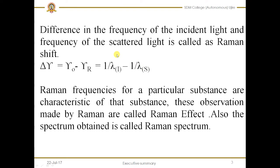C.V. Raman also observed that the difference in the frequencies of the scattered light and the incident light is constant, and it depends upon the nature of the substance and is independent of the frequency of the incident light. If you consider the electromagnetic radiation having a frequency nu, then nu_0 is the frequency of the incident light and nu_s is the frequency of the scattered light, then delta nu is given by nu_0 minus nu_r, that is the difference between the two frequencies. This difference between the two frequencies is called the Raman shift, and this Raman shift is represented by wave numbers.